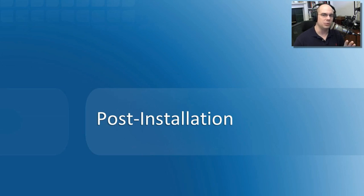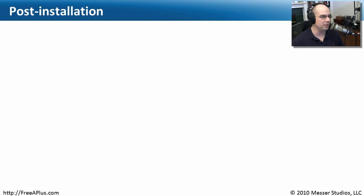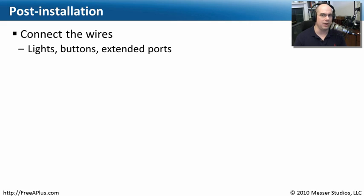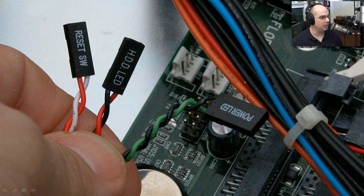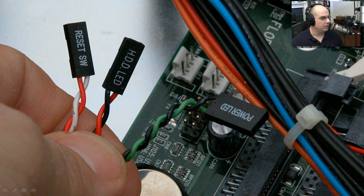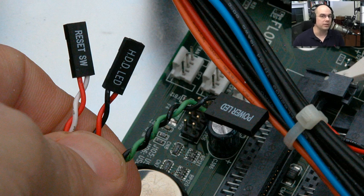Once we have the motherboard in place, we're not quite done. Remember all those cables? We want to be sure we're able to connect all those wires up to where they go, because there are lights and buttons on your case, and ports that need to be extended off your motherboard. You'll want to plug in your keyboard and monitor. You'll notice all those wires probably have writing on them — that's really the only way to keep track of all of this. They may be labeled: reset switch, hard drive light, power LED.